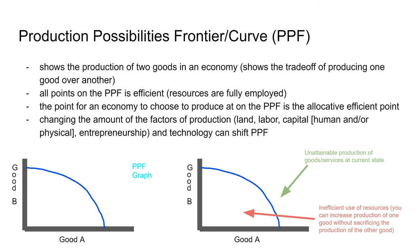The production possibilities frontier, or PPF, shows the production of two goods and the products that an economy can make, and on the PPF you can see the trade-off between one good over the other. All points on this curve are efficient. If you're inside the curve you are producing at an inefficient point, meaning you don't have all your resources employed. If you go outside your PPF curve, you're at a point you cannot attain because you simply don't have the resources. By changing the factors of production — land, labor, capital, and entrepreneurship — you can expand or shrink your PPF.